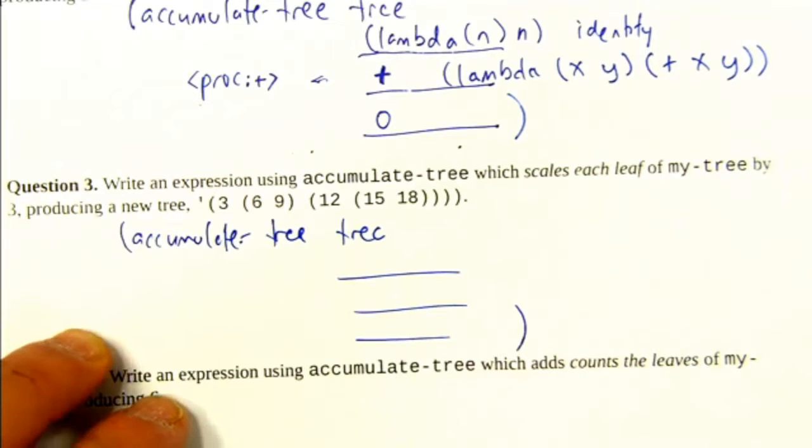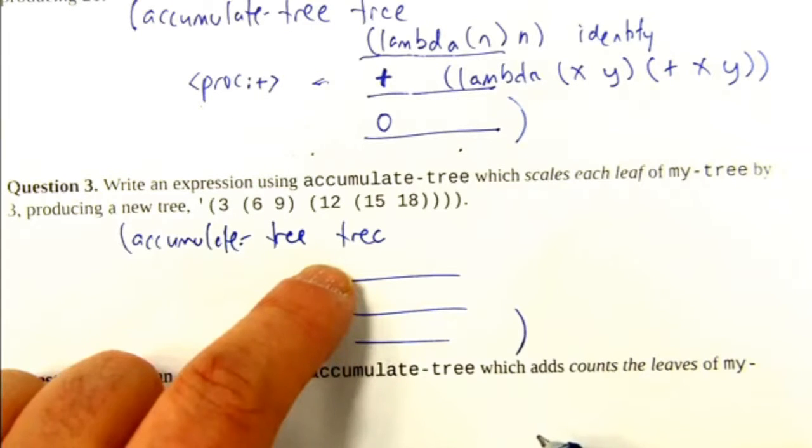First parameter is the transformation function, right? The one that takes a leaf.